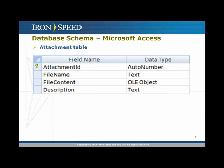Before we get started, let's talk about the database schema. If you're using Microsoft Access, imagine you have a table called Attachment. The most likely field type you'll use is the OLE object field. In the schema shown here, you have an attachment ID, a file name, a file content, and a description. The file name is a text field and the file content is an OLE object — the best option for saving binary large objects in Access.